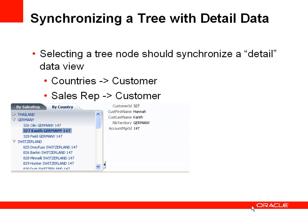Let's look at a common example where you have a UI tree control and selecting an item on that tree control should synchronize and show detailed data for the node you've just selected. For example, we might have a tree control showing a list of countries, and selecting a customer node would show the details for that customer. Similarly, we might have a tree control showing sales reps, and selecting a customer who belongs to a sales rep would show the details of that customer.